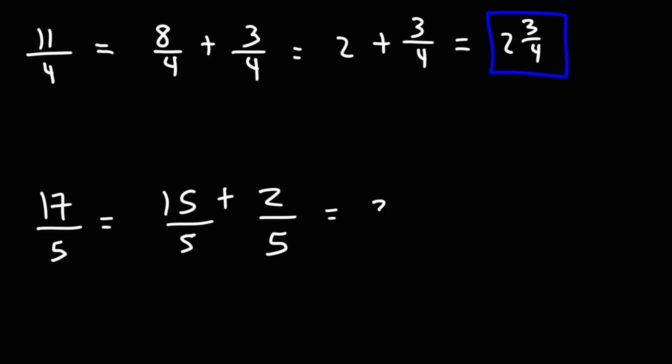Now, 15 divided by 5 is 3, and 3 plus 2 fifths is 3 and 2 fifths. Now, let's try some harder examples with bigger numbers.